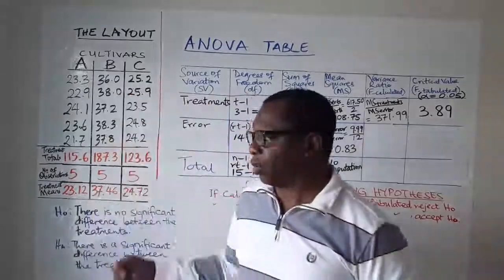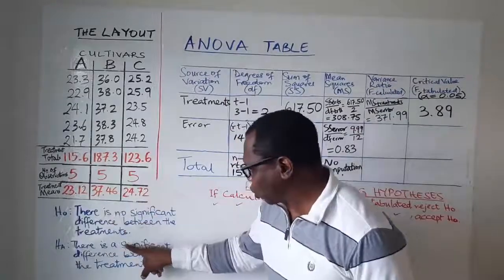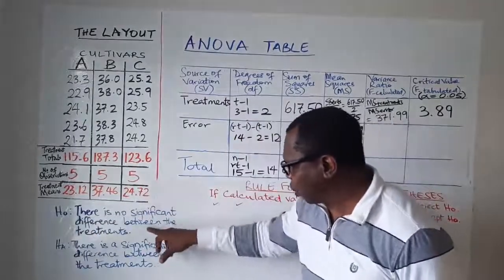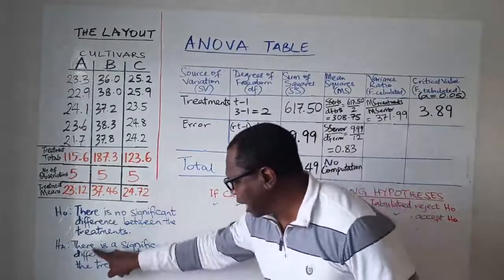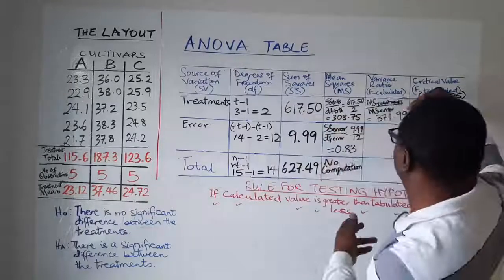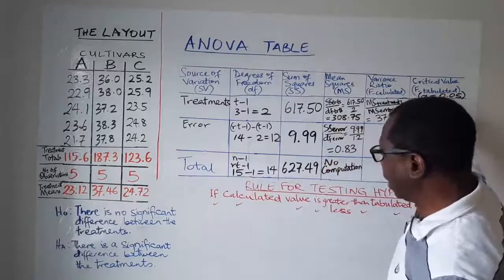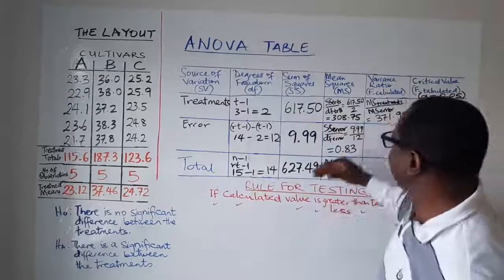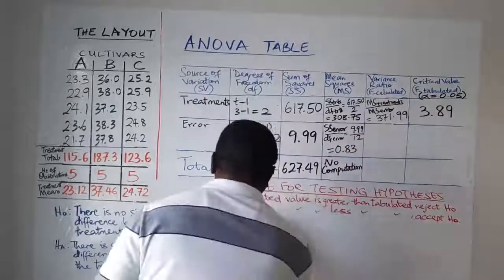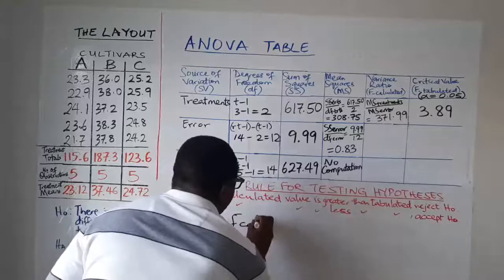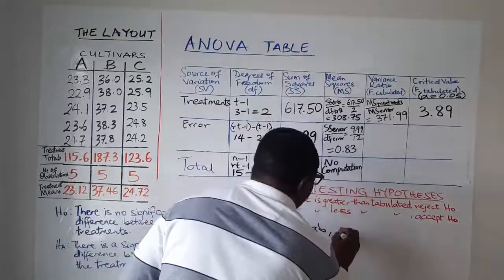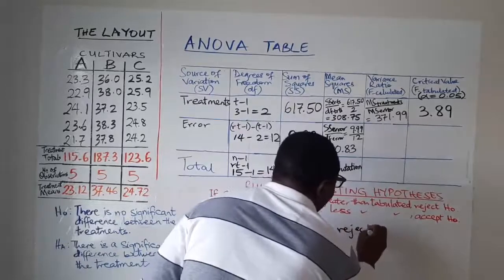So from the previous video, we stated the hypothesis this way, that our H0 says there is no significant difference between the treatments, while the alternative says the exact opposite. So in this analysis now, it is very clear that since our F calculated is greater than F tabulated, we reject the null hypothesis.